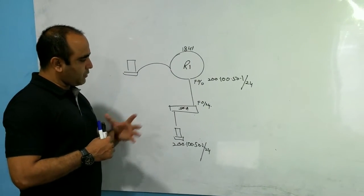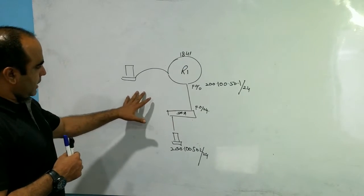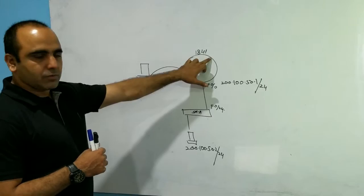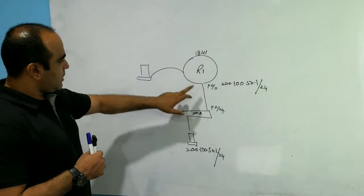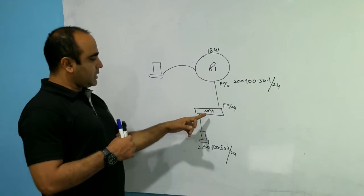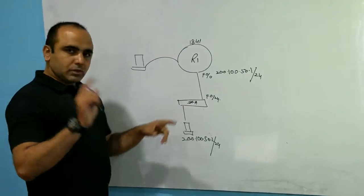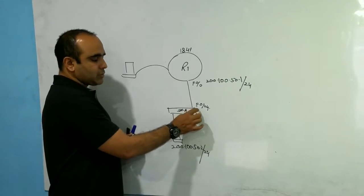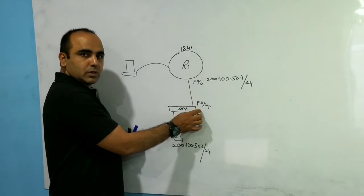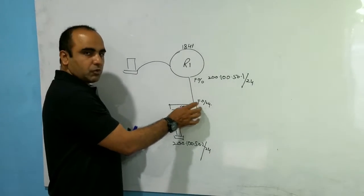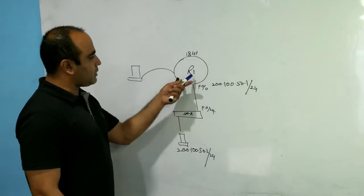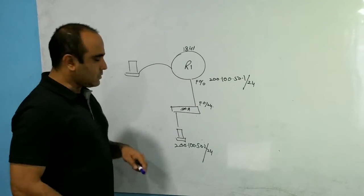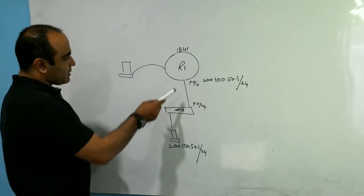In front of you, here is the diagram in which I am using the router 1841 series. The router is connected with the switch. Keep in mind, when we connect the router with the switch, we always use the last port of the switch — that is port 24 — and that port is connected with the router's port, which is Fast Ethernet 0/0, using a straight cable.